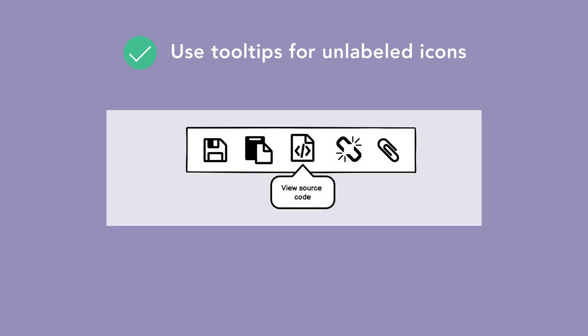Lastly, use tooltips for unlabeled icons. This one's tough because at NNG we've always recommended labeling icons, and that's still true today. So best case scenario, your icons are labeled, but if they're not, at the very least provide users with tooltips for each, so that they have a chance at correctly interpreting what the icon is. Tooltips are often a failsafe for users when they can't understand something. Many of today's use cases for tooltips could be removed if people followed other design guidelines, like labeling icons.